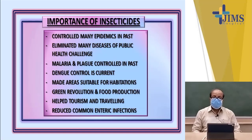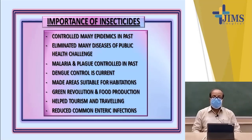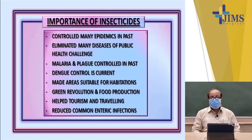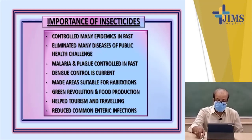With the use of pesticides and insecticides, areas were made suitable for human habitation and they also caused the green revolution with much more production of food. They helped in tourism and traveling, and also reduced common enteric infections by killing certain vectors like houseflies, which carry the germs of diseases like typhoid fever, gastroenteritis, and many more. These are the importances of insecticides.